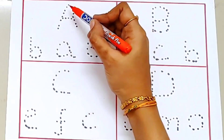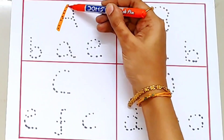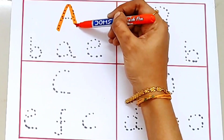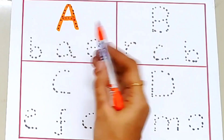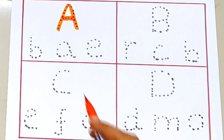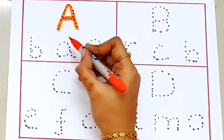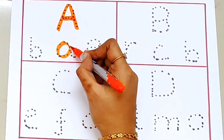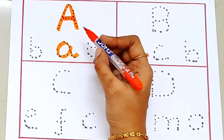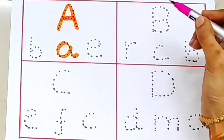A. Capital A. A for apple. Let's find small a. Here it is. Small a. Capital A. Small a.